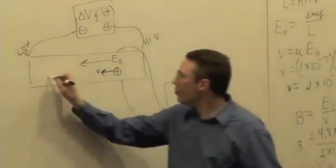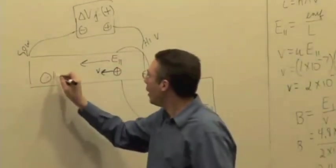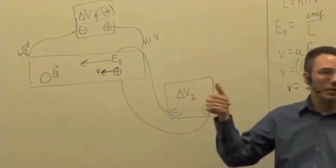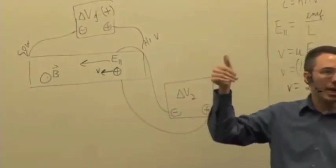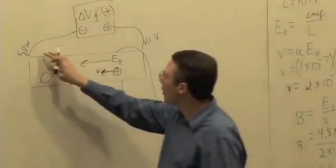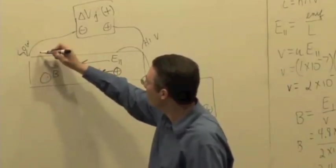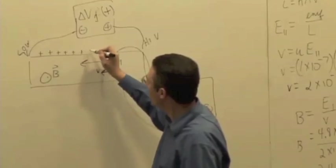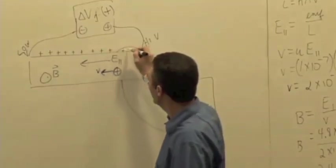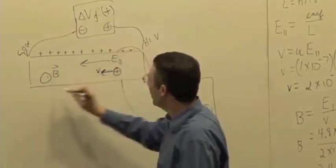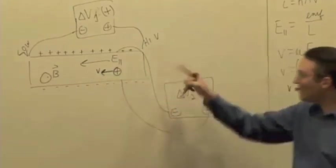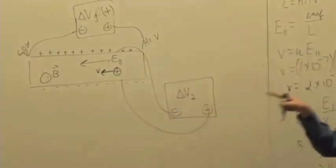The magnetic field is pointing out. So the magnetic force on a positive charge moving that way would be upward. On the top, I would get a buildup of positive charge, and on the bottom, I would get a buildup of negative charge. But does that agree with voltmeter 2's reading?